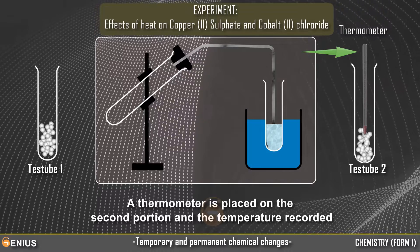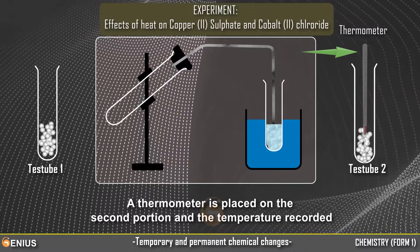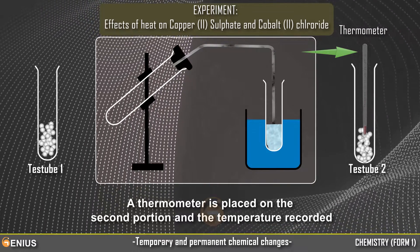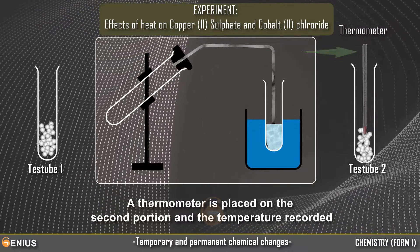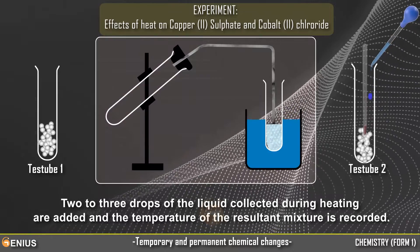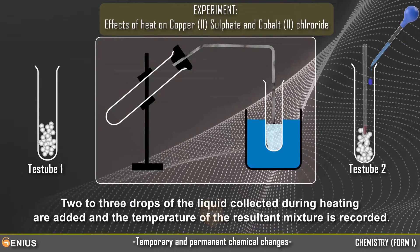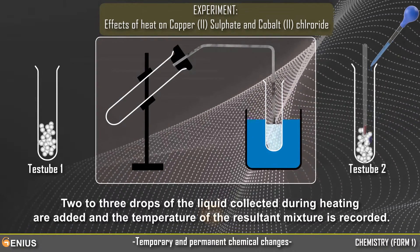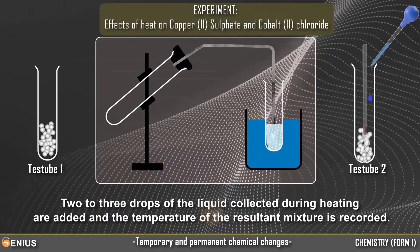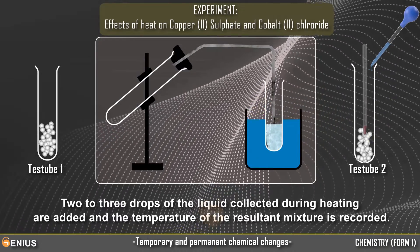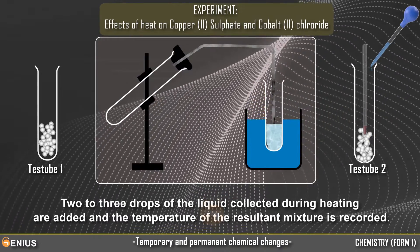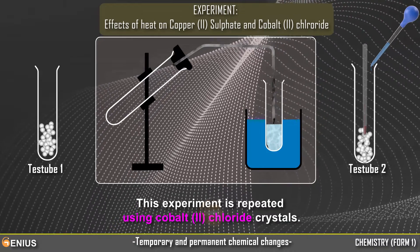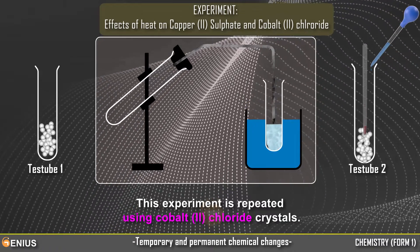A thermometer is placed on the second portion and the temperature recorded. Two to three drops of the liquid collected during heating are added and the temperature of the resultant mixture is recorded. This experiment is repeated using cobalt-2 chloride crystals.